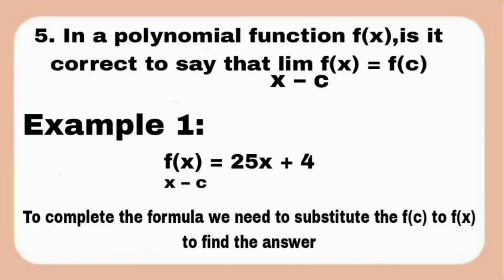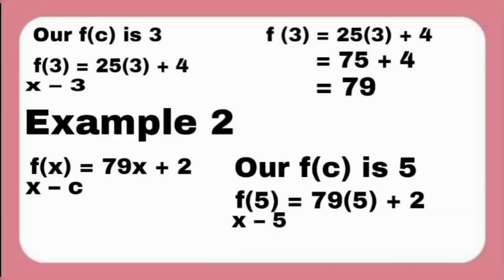In a polynomial function f of x, is it correct to say that the limit of f of x is equal to f of c where x approaches c? Example 1: f of x is equal to 25x plus 4, where c equals 3. To evaluate, we substitute f of c into f of x. So f of 3 equals 25 times 3 plus 4, which gives 75 plus 4, equal to 79.